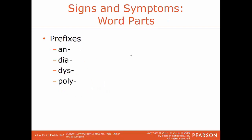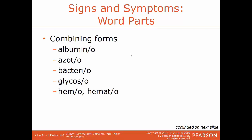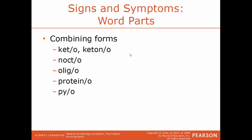Now we'll go over some signs and symptoms word parts. Prefixes: an means lacking or without; dia means complete or through; dis means painful, abnormal, or difficult; and poly means many or more than one. Common combining forms: albumino is a reference to protein; azato is a reference to urea or nitrogen; bacterio is a reference to bacteria; glycoso is a reference to sugar; hemo or hemato are both a reference to blood; keto or ketono is a reference to ketones or acetones; nocto is a reference to night; oligo is a reference to few; proteino is a reference to proteins; and pio is a reference to pus.